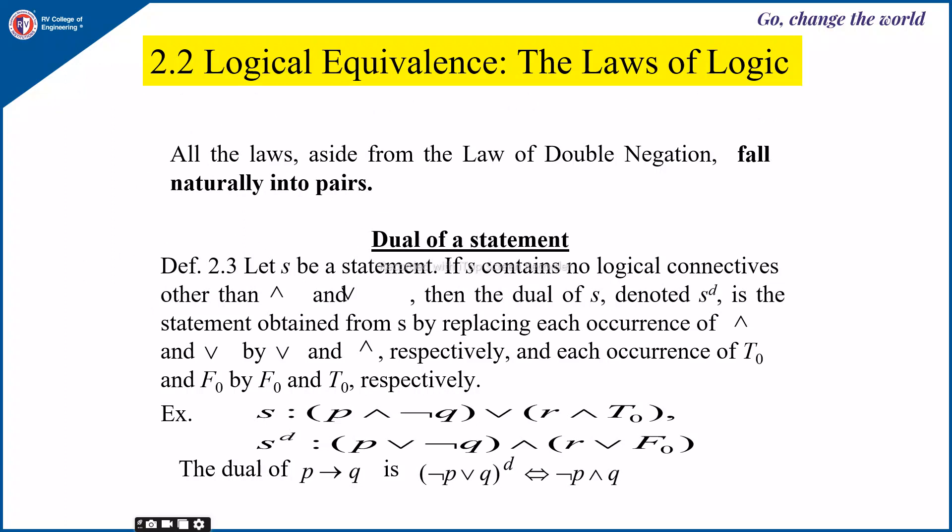Next is the dual of a statement — what it is and how to obtain the dual of a given statement. Suppose S is a statement containing no logical connectives other than ∧ and ∨. If a statement contains implication or equivalence, we first convert it into an equivalent statement containing only ∧ and ∨. Then the dual of S, denoted S^D, is obtained from S by replacing each ∧ by ∨ and ∨ by ∧, and each T₀ by F₀ and F₀ by T₀.